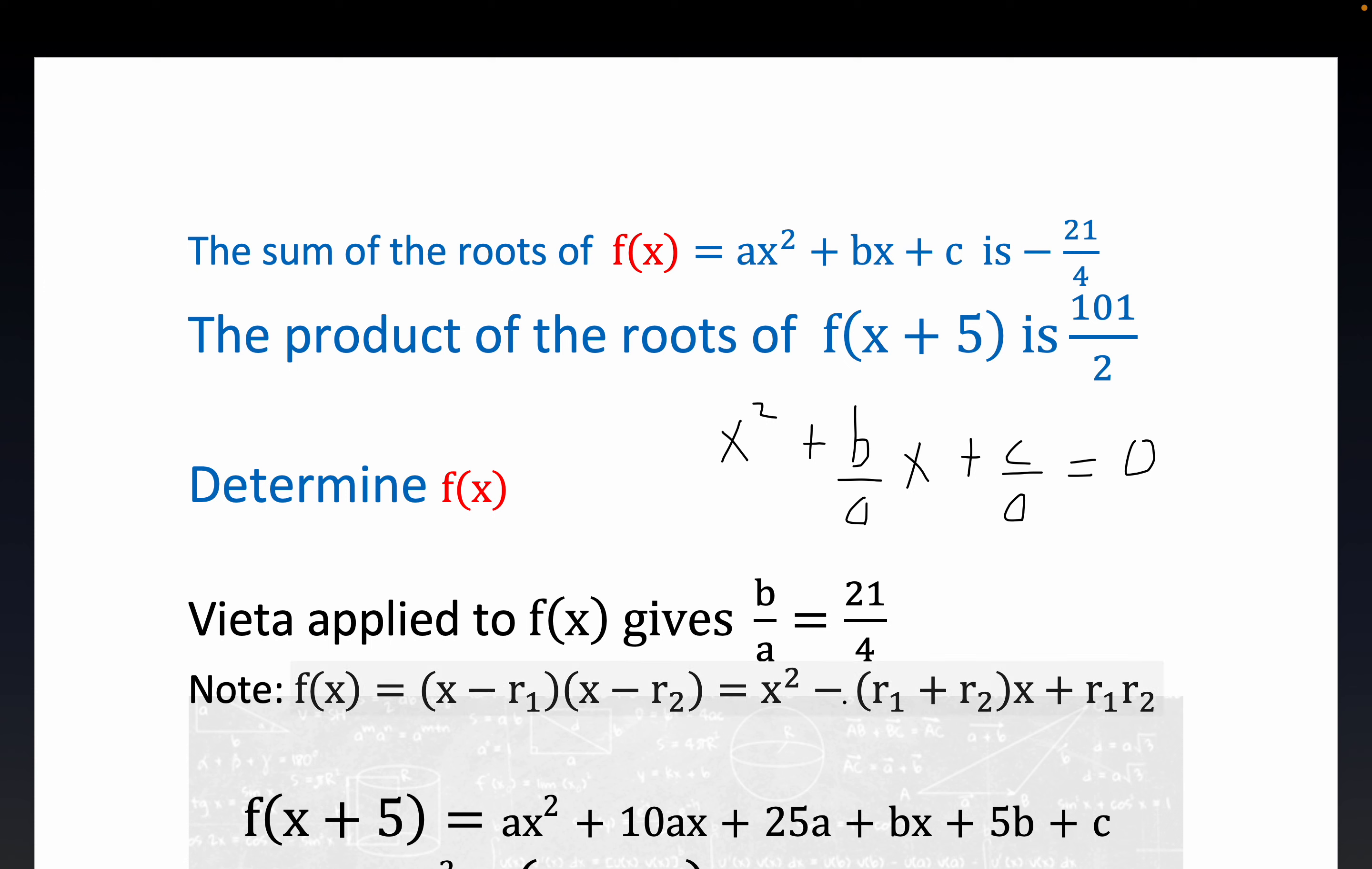They're unknown, but minus, whatever they are, minus their sum is the coefficient of X. So you see right here, we have B over A as the coefficient of X, but minus the sum is what belongs right here.